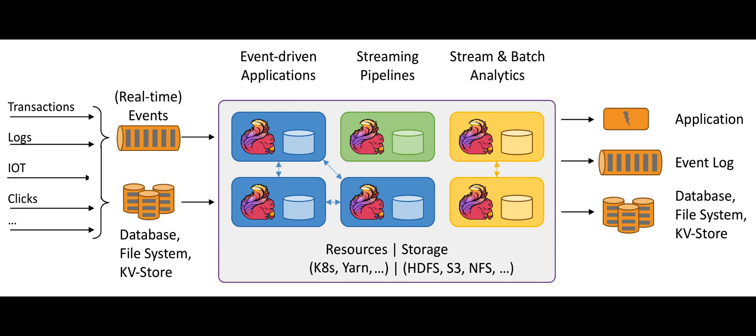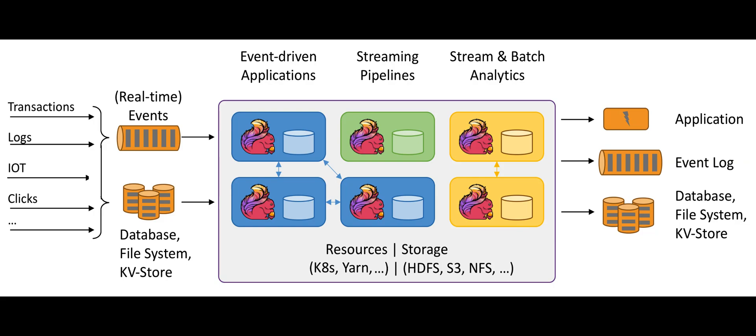Event-time processing: Flink has built-in support for event-time processing, which is essential for correctly handling out-of-order events in stream processing. Stateful processing: Flink supports stateful processing, allowing you to maintain and manage state information across processing time and event time.